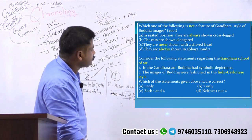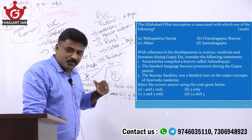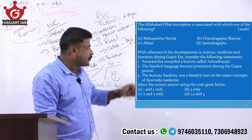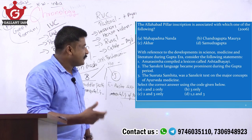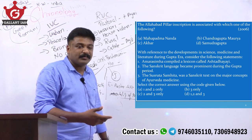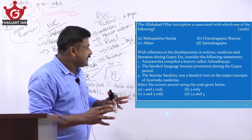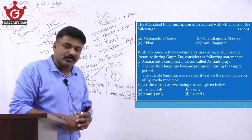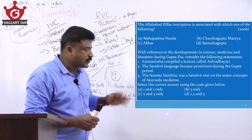The Allahabad pillar inscription is associated with Samudragupta; it also contains inscriptions of Ashoka and Jahangir. With reference to developments in science, medicine, and literature during the Gupta period: Amarasimha compiled a lexicon called Ashtadhyayi — wrong, Amarasimha's famous work is Amarakosha; Ashtadhyayi is a Sanskrit grammar work by Panini. Patanjali's Mahabhashya is also a Sanskrit grammar work. Sanskrit language became prominent during the Gupta period — exactly true. Sushruta Samhita, a Sanskrit text on major concepts of Ayurveda medicine, is also true. So statements two and three are correct; answer is C.